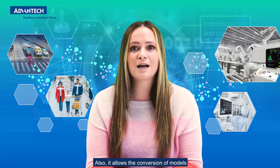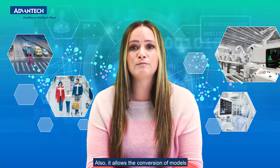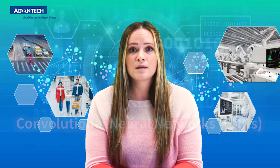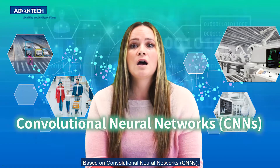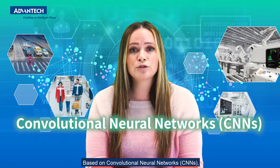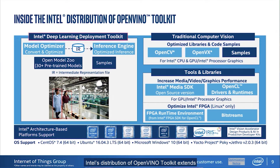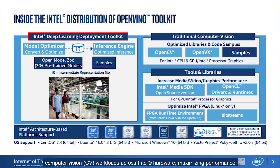Also, it allows the conversion of models from TensorFlow, Caffe, MXNet, Kaldi, and ONNX. Based on convolutional neural networks, Intel's distribution of OpenVINO toolkit extends computer vision workloads across Intel's hardware, maximizing performance.